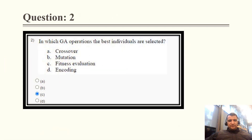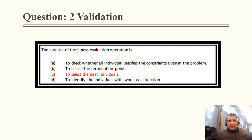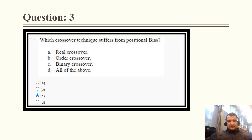Question 2: In which genetic algorithm operation are the best individuals selected? It is a straightforward question. In the fitness evaluation operation, the best individuals are selected, and then they go for crossover and mutation — that is reproduction. The purpose of fitness evaluation is to select the best individual.